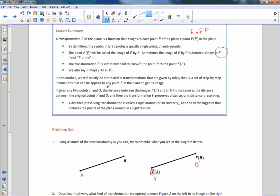In this module, we'll mostly be interested in transformations that are given by rules. That is, a set of step-by-step instructions that can be applied to any point P in the plane to get its image somewhere else. If given any two points P and Q, the distance between image F of P and F of Q will be the same as the distance between the original P and Q like I showed you in the example. And then the transformation F preserves the distance or is distance-preserving is what we call that. A distance-preserving transformation is called a rigid motion or an isometry. And the name suggests that it moves the points of the plane around in a rigid fashion, meaning it does not rearrange its shape or size. Okay?